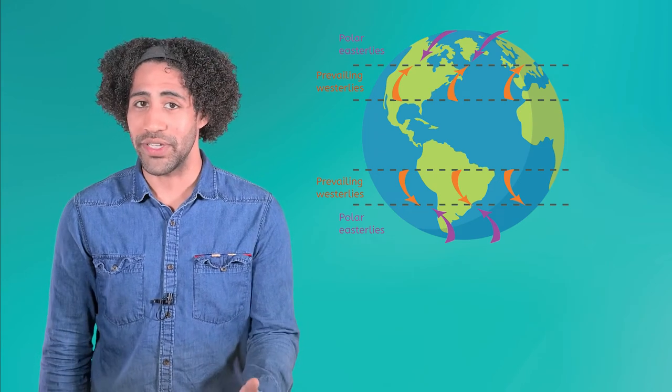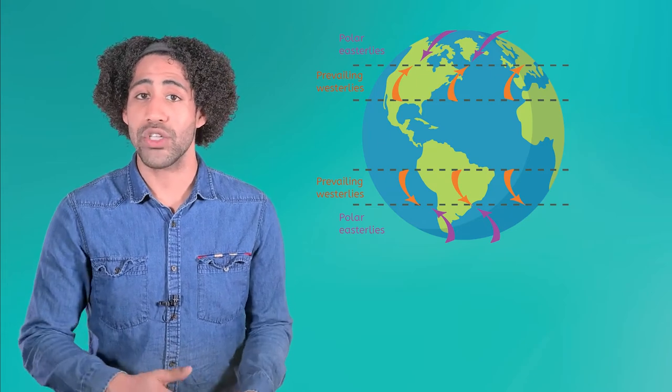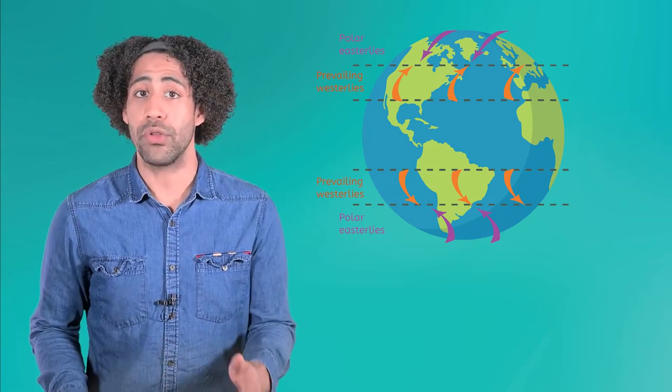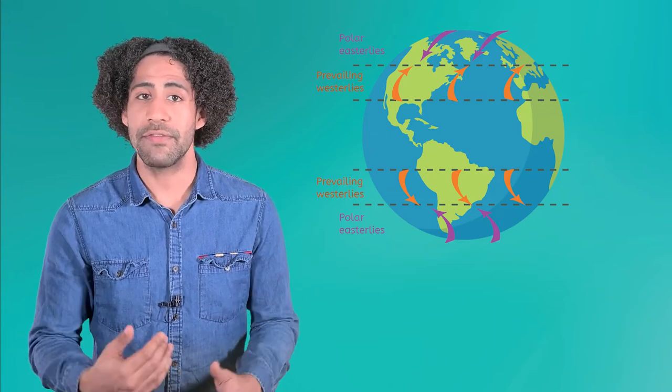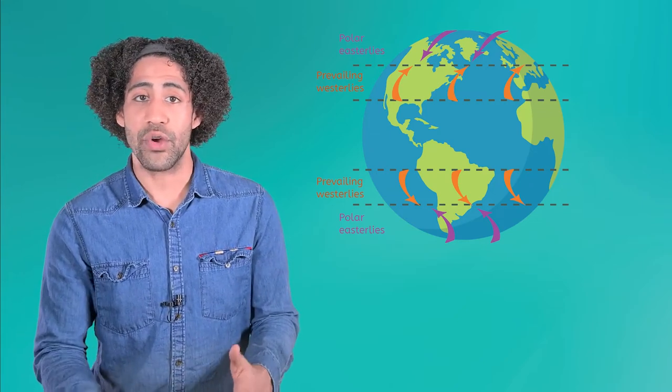The prevailing westerlies circulate warmer air back towards the poles, while the polar easterlies blow cold air away from the poles. This convection cycle keeps air moving around our planet.